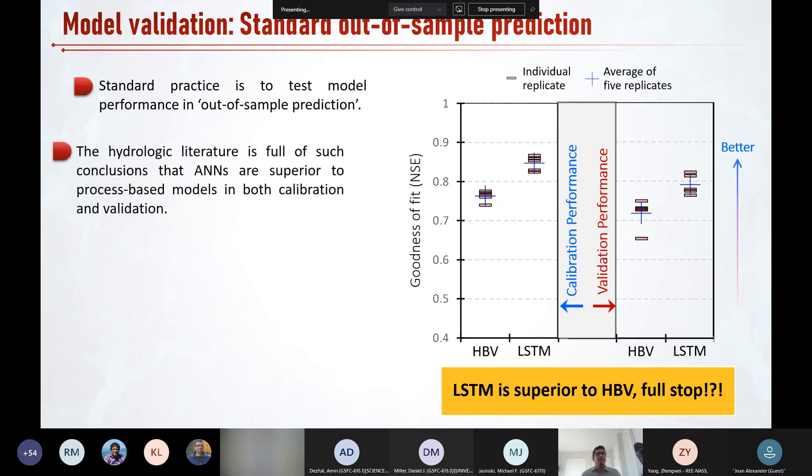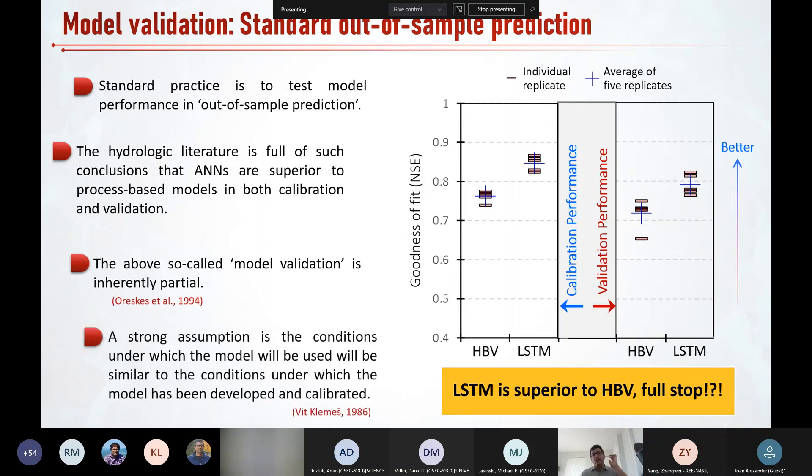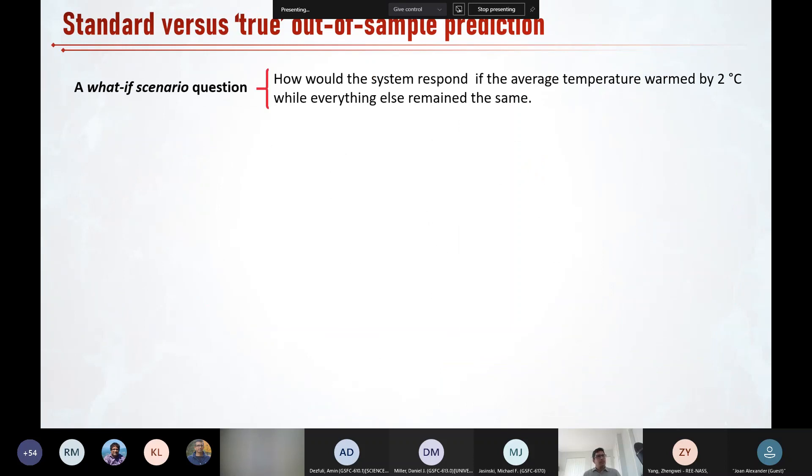Perhaps not. The thing is, as Oreskes nicely articulated many years ago, the above so-called model validation is inherently partial. While the performance of LSTM appears to be better than that of HBV in a relative sense, one needs to take extra care before making such a conclusion. As argued by Klemeš more than three decades ago, a strong assumption in this type of validation is that the conditions under which the model will be used will be similar to the conditions under which the model has been developed and calibrated. It is now well recognized that such an assumption may not hold, as many natural systems are essentially non-stationary. Despite such recognition, this standard model validation practice has arguably remained unchanged.